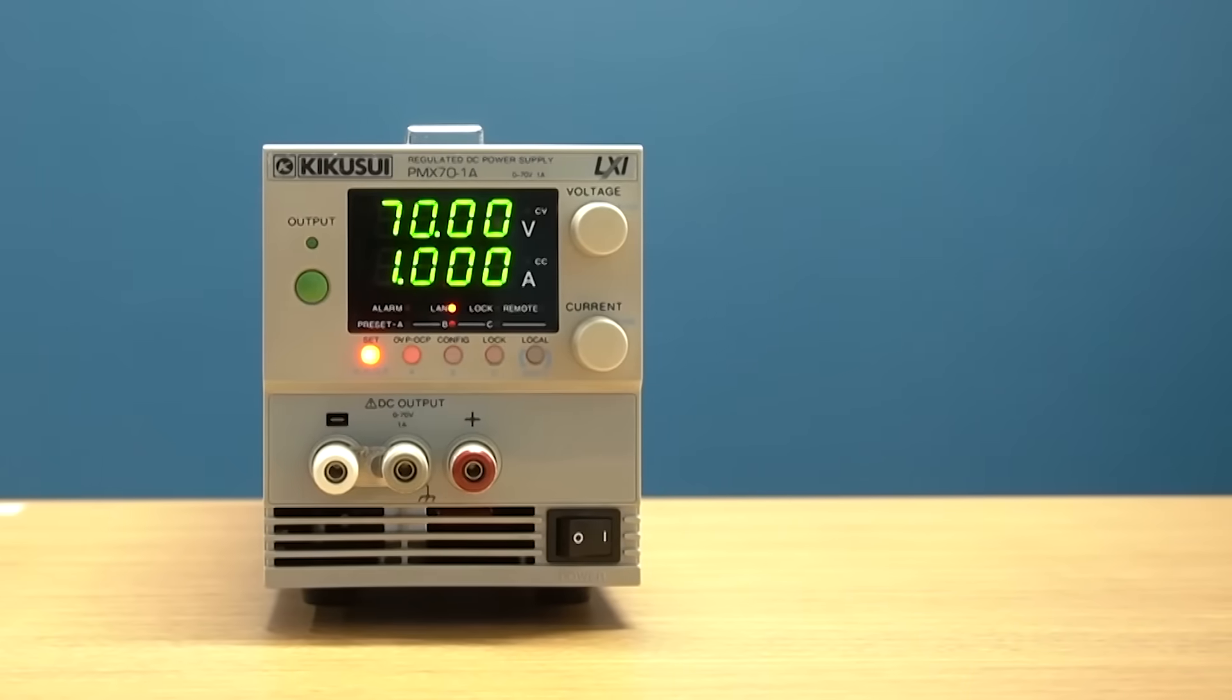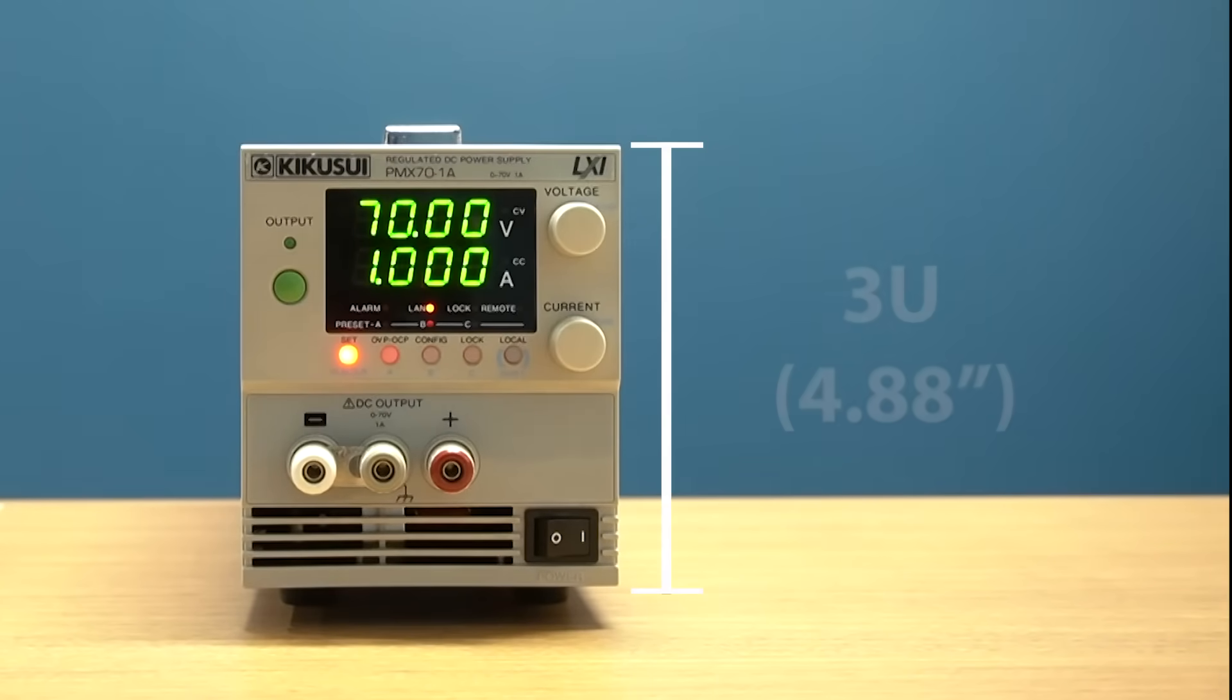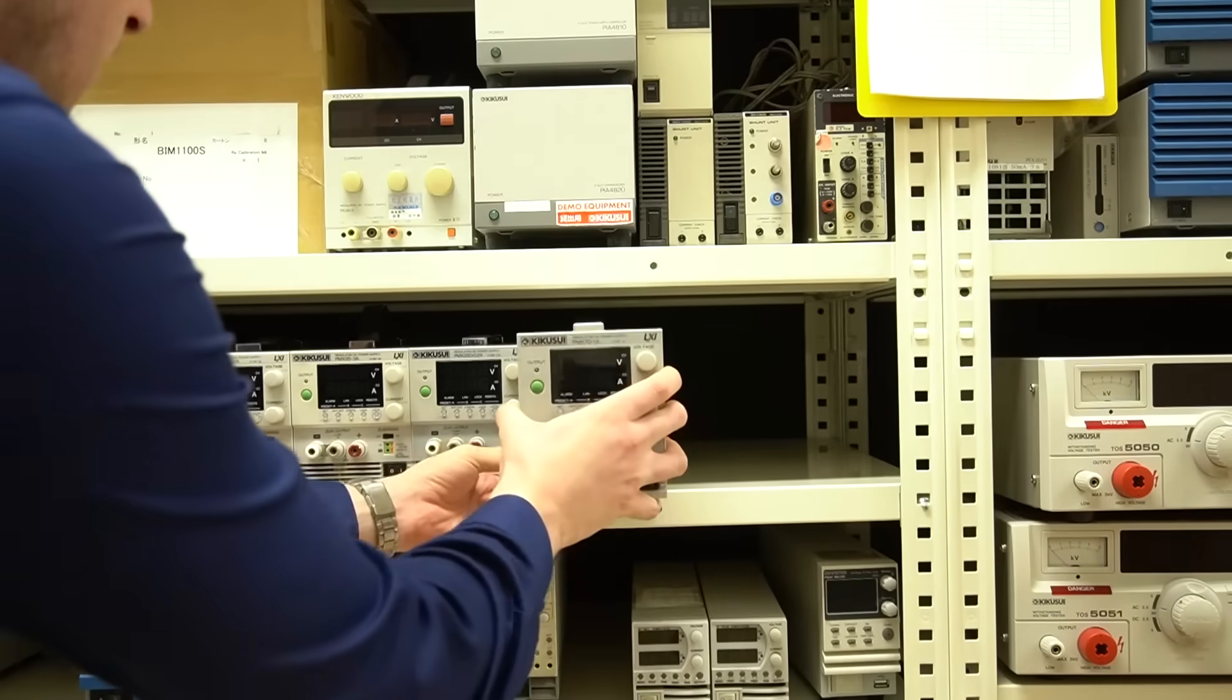Despite its linear design, the PMX-A has a very compact height of 3U, which is optimized for rack mount operation.